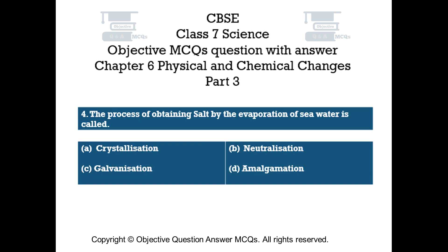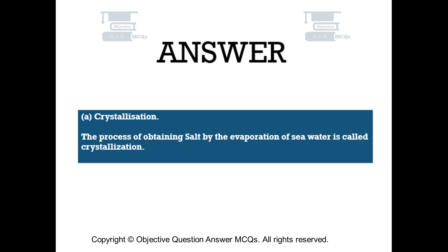Question number 4. The process of obtaining salt by the evaporation of sea water is called: Option A crystallization, Option B neutralization, Option C galvanization, Option D amalgamation. The right answer is Option A — crystallization. The process of obtaining salt by evaporation of sea water is called crystallization.